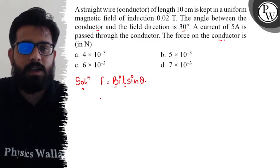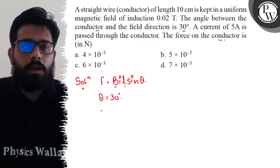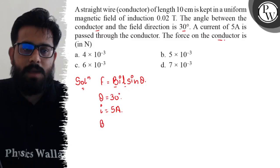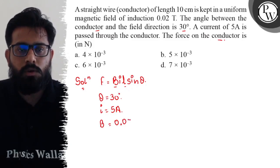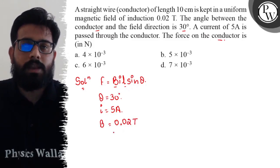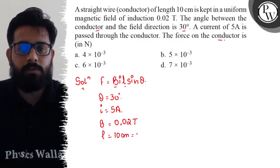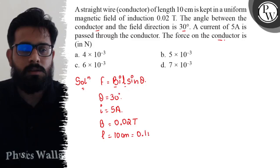Current is 5 ampere as given in the question. And the value of the magnetic field is given as 0.02 Tesla. But what about the length? Length is 10 centimeter, so if you convert to meters then you will get a value of 0.1 meter.